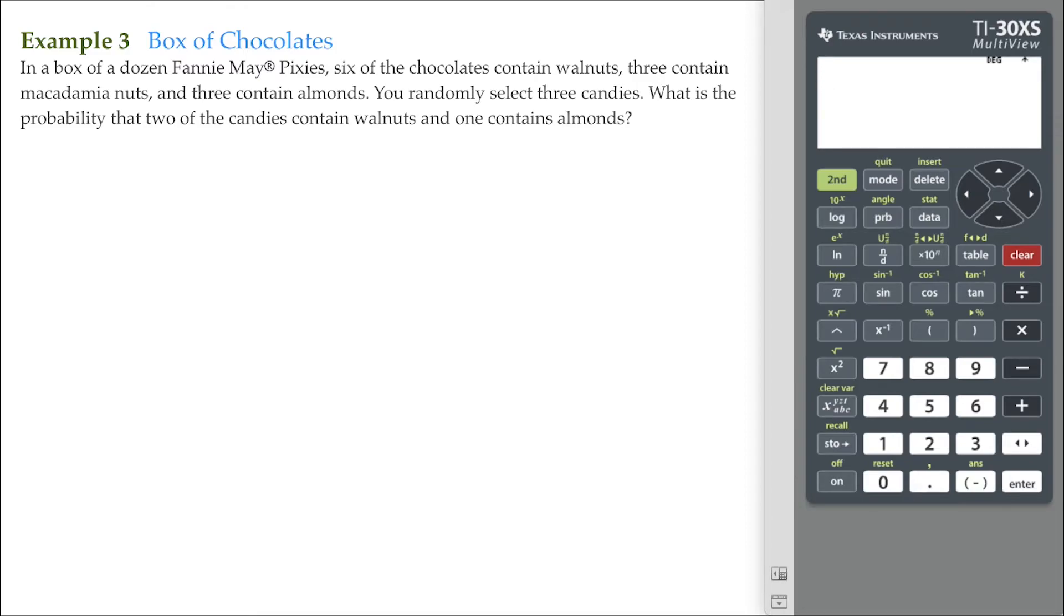With this example, we will continue determining probabilities. In a box of a dozen Fannie Mae Pixies—these chocolate candies—six of the chocolates contain walnuts, three contain macadamia nuts, and three contain almonds.